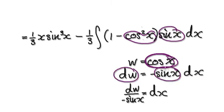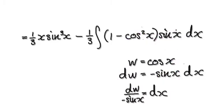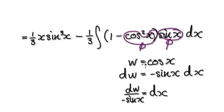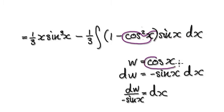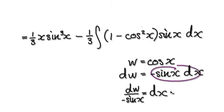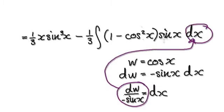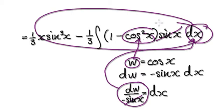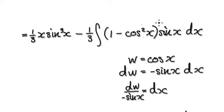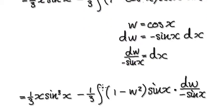Then your dw will contain the sine term and it will cancel itself out. Recognize that this thing here is near enough the derivative of this thing here. Let w be cos of x, then dw equals this thing here, then dx equals this. So we can put this into the dx and then this thing will cancel out with this. Put this in and this whole thing will then become this.